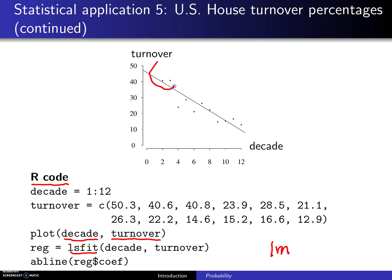One explanation for the higher turnover in earlier decades is that people didn't live as long back then, so they couldn't serve as many terms in the US House of Representatives. It's also possible that back then, people would get elected, serve a term or two, and then return to the jobs they came from. Whereas now there's more of what you would call a career politician, where once they get into the House of Representatives, they stay there for a long time. That ends this fifth application — US House of Representatives turnover percentage — using simple linear regression.